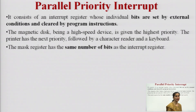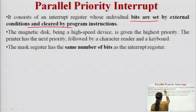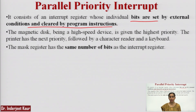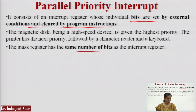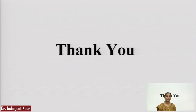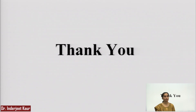It consists of an interrupt register whose individual bits are set by external conditions and cleared by program instructions. The magnetic disk, being a high-speed device, is given higher priority. The mask register has the same number of bits as the interrupt register. This was all about the first and second methods — programmed IO and interrupt-initiated IO modes of transfer. In the next lecture series, we will be discussing DMA, that is direct memory access. Thank you.